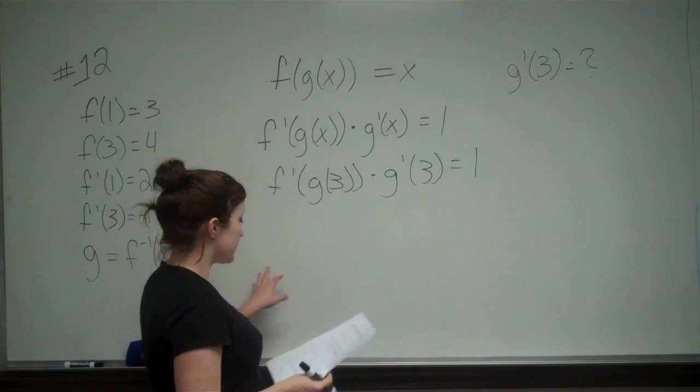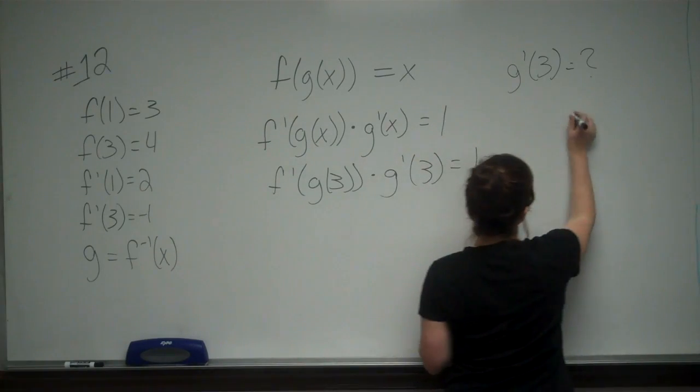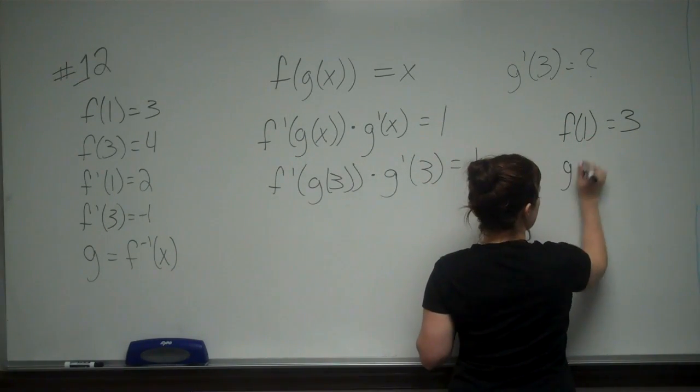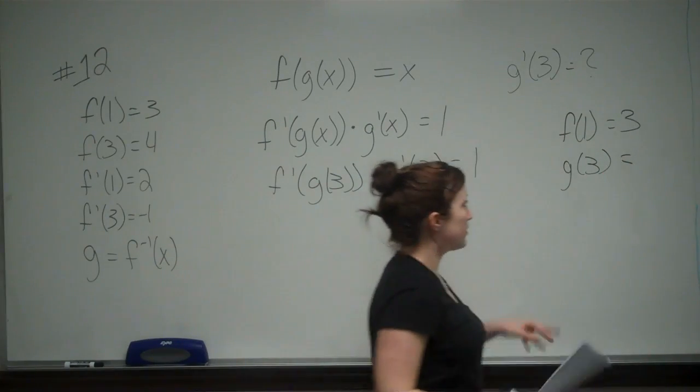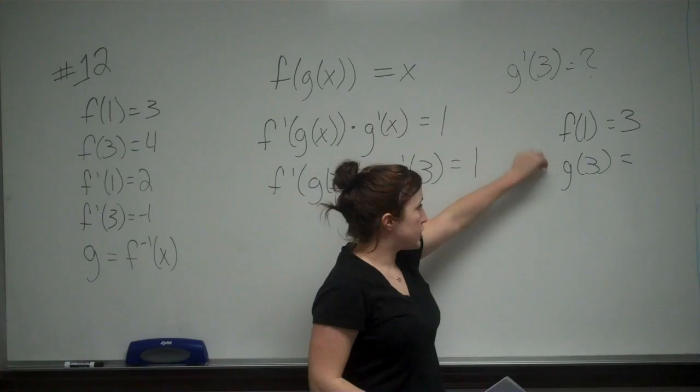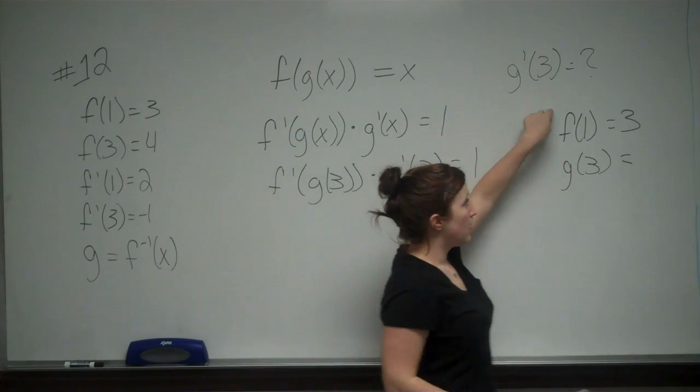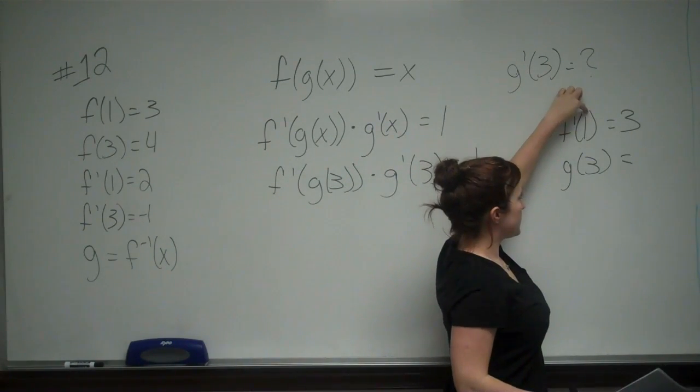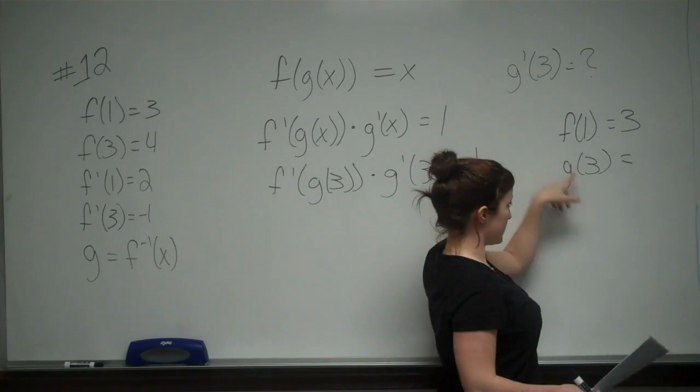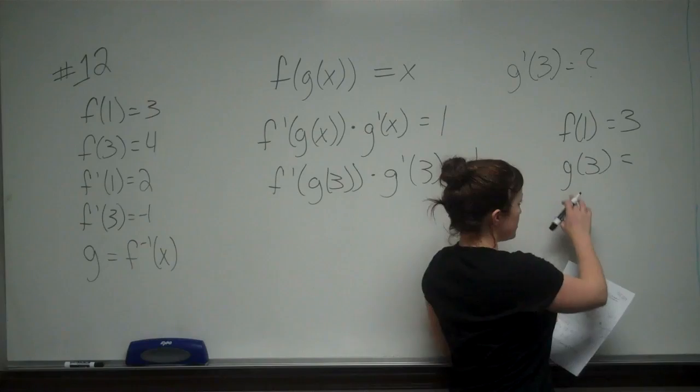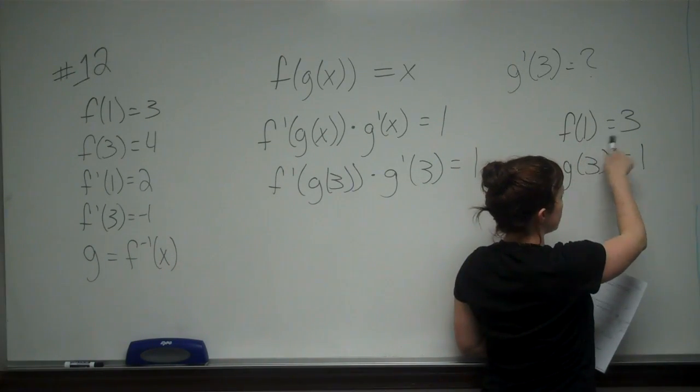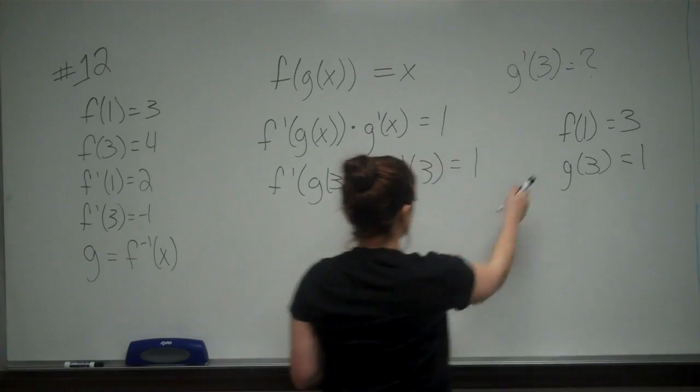So it also gives us the hint that if f of 1 is equal to 3, what is g of 3 equal to? Well, we know that these two are inverses, so if g of x is an inverse of f of x, all of our x values in our f of x equation become our y values, and all of our y values become our x values in g of x. So g of 3 is going to be equal to 1, because f of 1 is equal to 3, and these two are inverse functions.